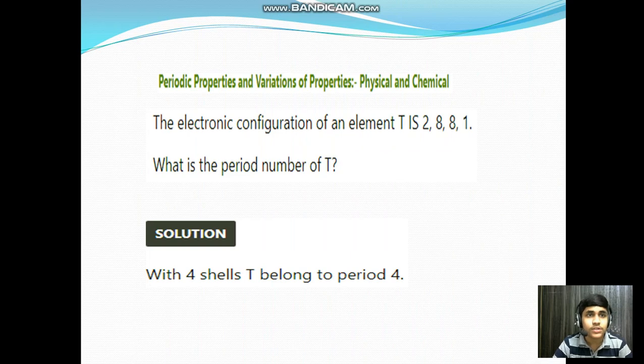Chapter: Periodic Properties and Variation of Properties, Physical and Chemical. The electronic configuration of an element T is 2, 8, 8, 1. What is the period number of T? Solution: with 4 shells, T belongs to period 4.